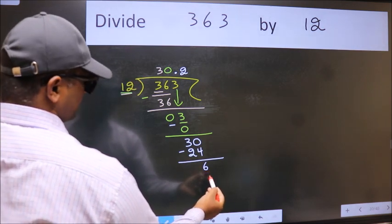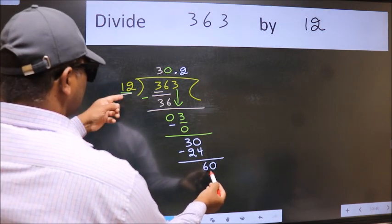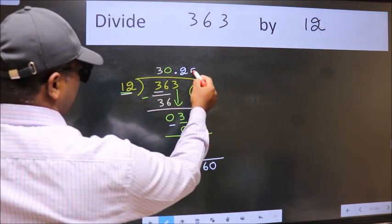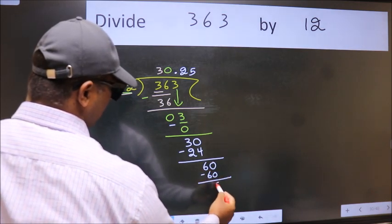6 is smaller than 12. We already have the decimal. So directly take 0. So, 60. When do we get 60 in 12 table? 12 fives, 60. Now we subtract. We get 0.